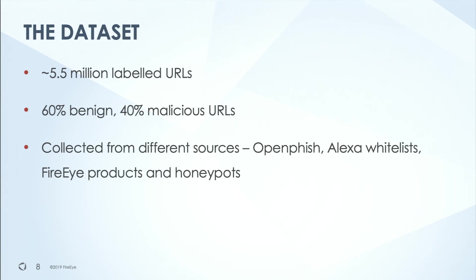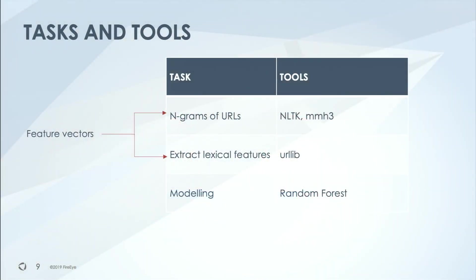A little bit about the dataset. I was working with about a five and a half million labeled URL dataset consisting of 60% benign and 40% malicious URL samples collected from a variety of sources like OpenPhish, Alexa whitelist, and mostly from internal FireEye products and honeypots. The design process was pretty straightforward — it involved generating feature vectors and the actual modeling. Since it's an NLP-based approach, I was sticking strictly to the URL string, and I used NLTK and Murmur hash encoding to encode the N-grams.